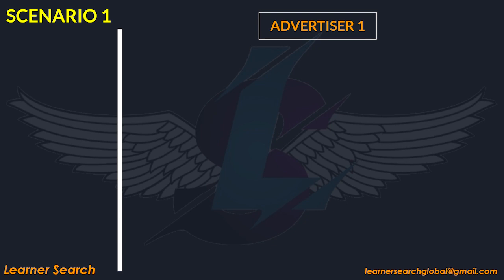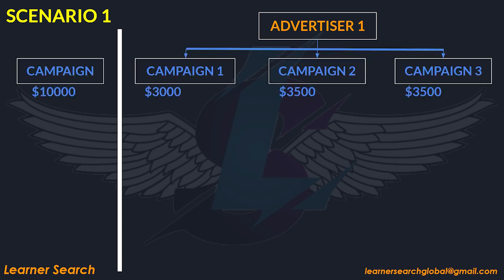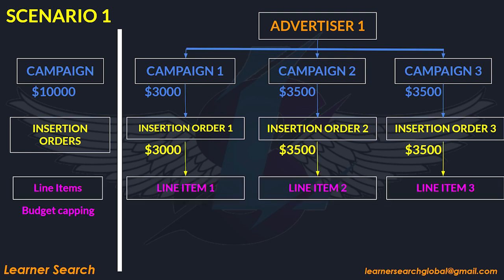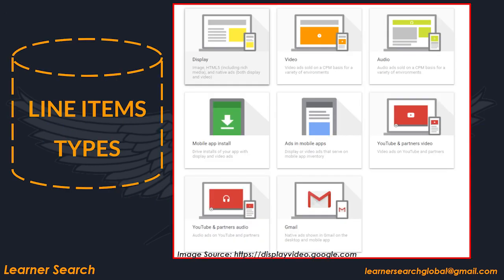For this example, let's consider the first scenario. As per the media plan budget details, we shall create a separate campaign for each media type. Under each advertiser, we can create three campaigns with budgets allocated to each media type. Under each campaign, we can create a new IO and the same budget flows to it. Under each IO, we shall create a single line item and the budget for these line items flows from their respective IOs. Remember, different media types cannot be added under a single line item — for example, display and video creatives cannot be added to a single line item. So we have to create separate line items for each media type and plan the structure accordingly.